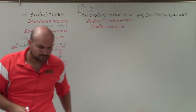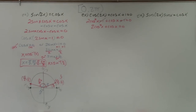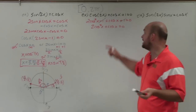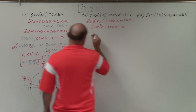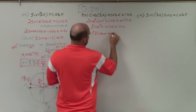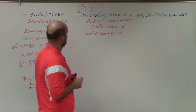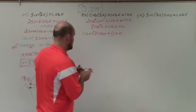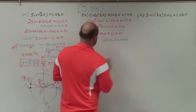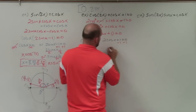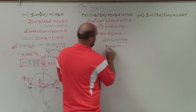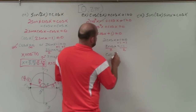Now this is very similar to what we did before — we factor out the GCF. Both terms share a cosine of x, so factoring out cosine of x leaves cosine of x times the quantity 2 cosine of x plus 1 equals 0. Applying the zero product property gives cosine of x equals 0, or 2 cosine of x plus 1 equals 0. Subtracting 1 and dividing by 2 gives cosine of x equals negative 1 half.